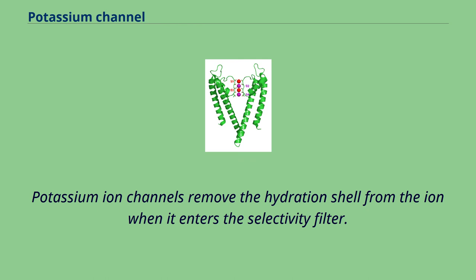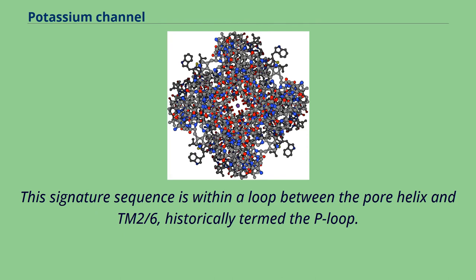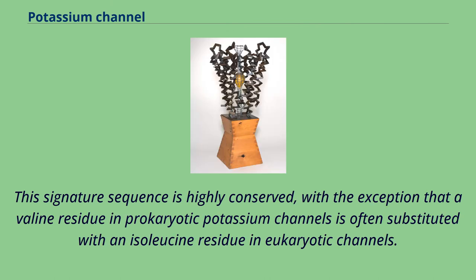Potassium ion channels remove the hydration shell from the ion when it enters the selectivity filter. The selectivity filter is formed by a five-residue sequence, TVGYG, termed the signature sequence, within each of the four subunits. This signature sequence lies within a loop between the pore helix and TM2, historically termed the P-loop. It is highly conserved, with the exception that a valine residue in prokaryotic channels is often substituted with an isoleucine in eukaryotic channels.